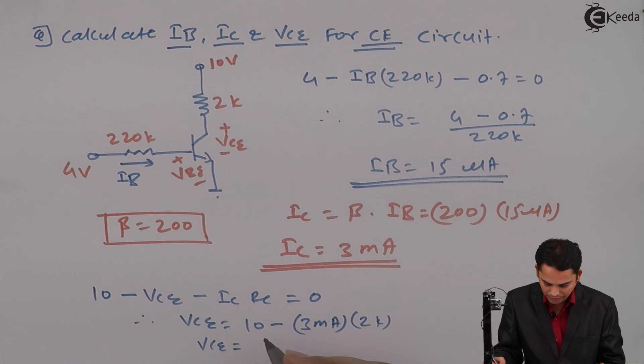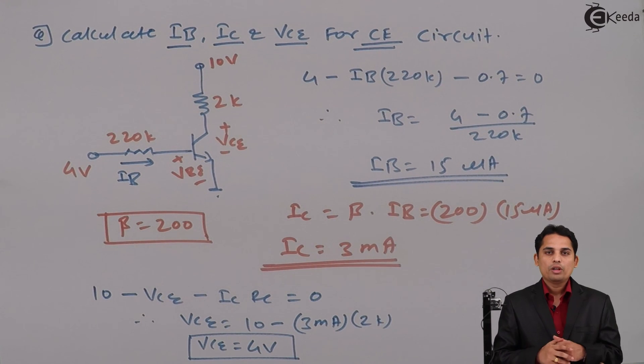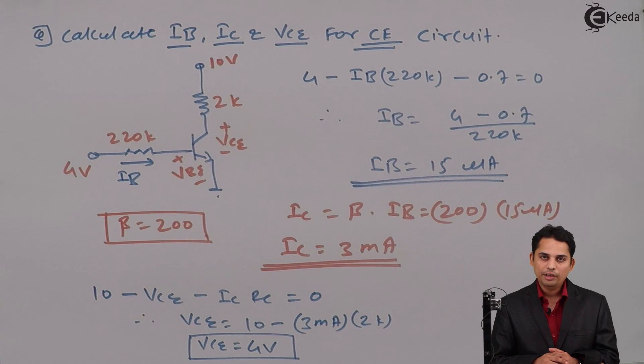Hence VCE equals 4 volts. So this is how we can calculate base current IB, collector current IC, and VCE in the given problem.